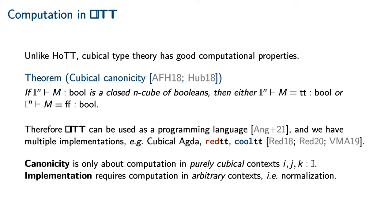In particular, if M is a closed n-cube of booleans, then either M is the true constant or M is the false constant. This property, called cubical canonicity, was the first major syntactic metatheorem to be proved about cubical type theory.